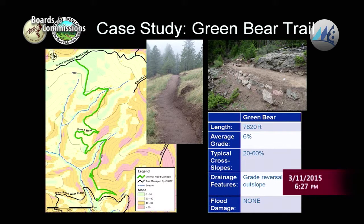Case studies from the flood: The Green Bear Trail was rerouted and finished in 2012, with about a 6% average grade on moderate cross slopes of 20% to 60%. We put grade reversals in, and that's about it — we saw little to no flood damage. We had to do some minor repairs at one drainage crossing, but that was it.